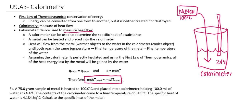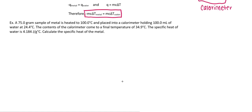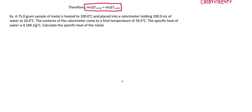Once you have this equation it's just plug and chug. The first thing we are going to do is define our variables. I like to make two columns — one for the metal and one for the water — it just helps to keep things straight.